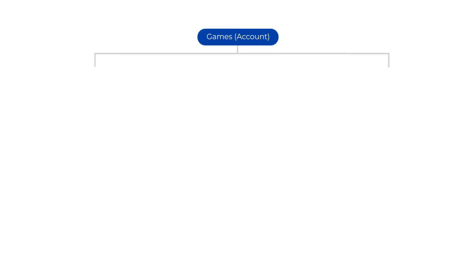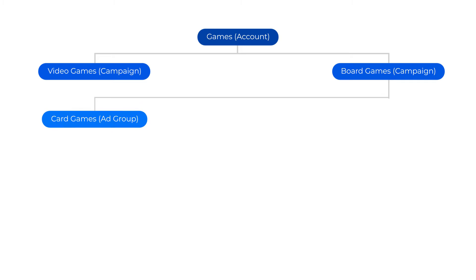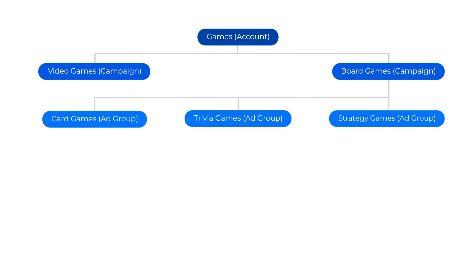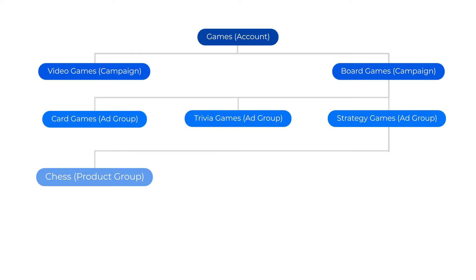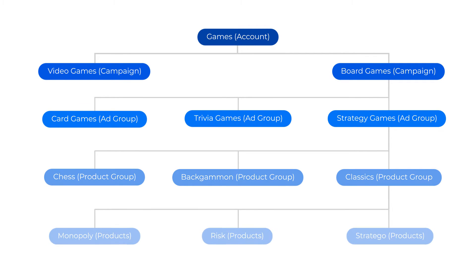For example, if you sell games, your structure could look like this. Here we see the hierarchical structure of your catalog with campaigns divided by top categories: video games and board games. Within the board games campaign, the ad groups are divided between card, trivia, and strategy. And within strategy, we have our product groups of chess, backgammon, and the classics. Finally, you have the products themselves.